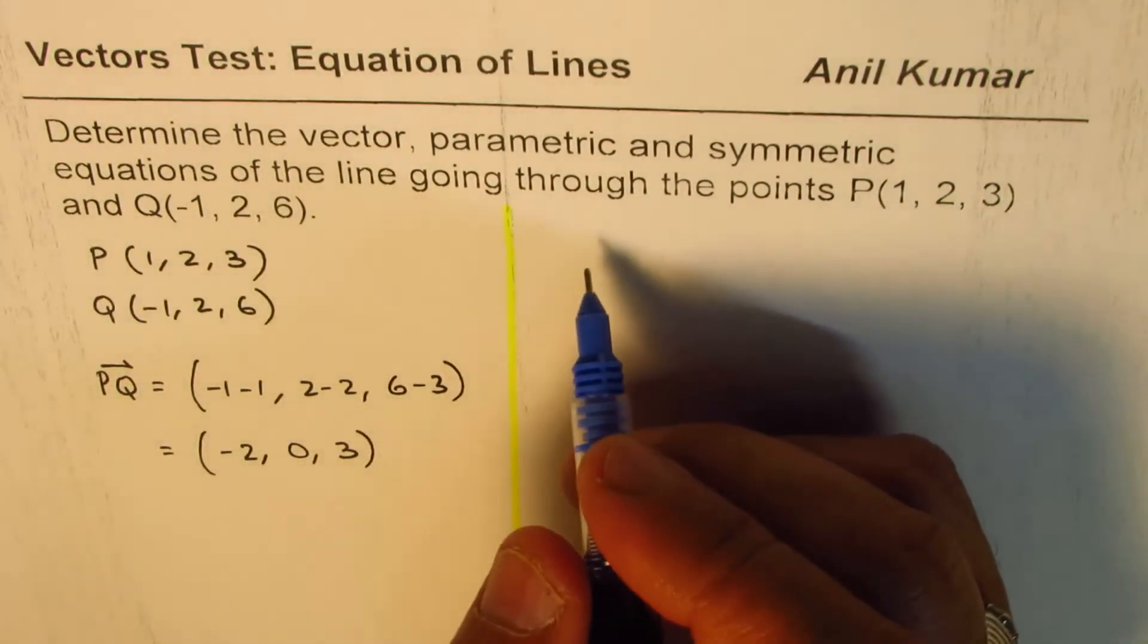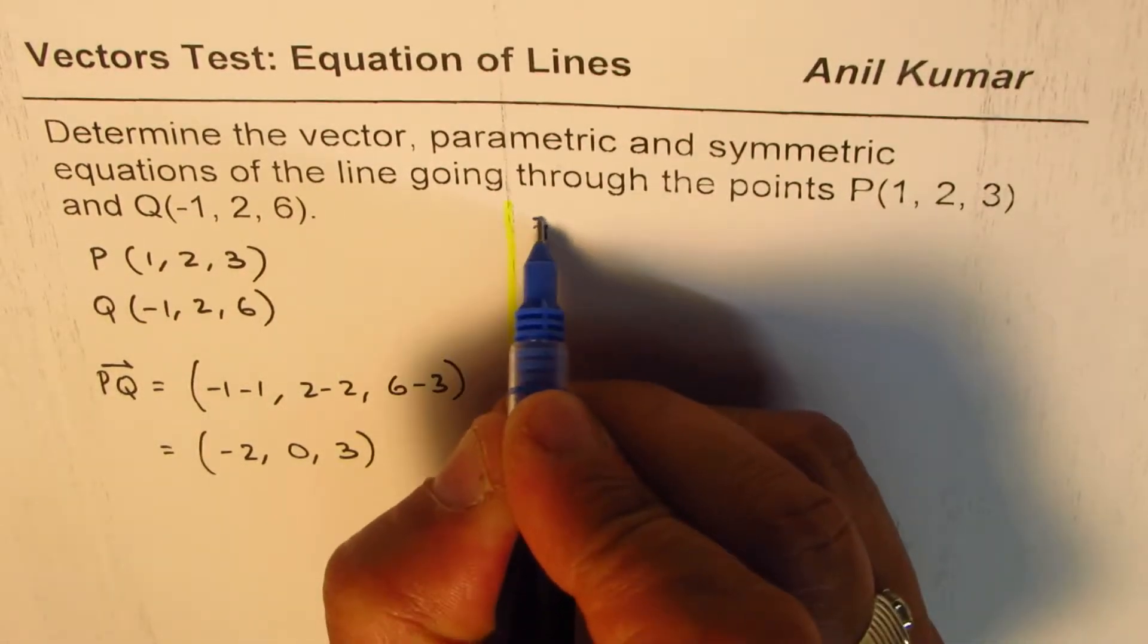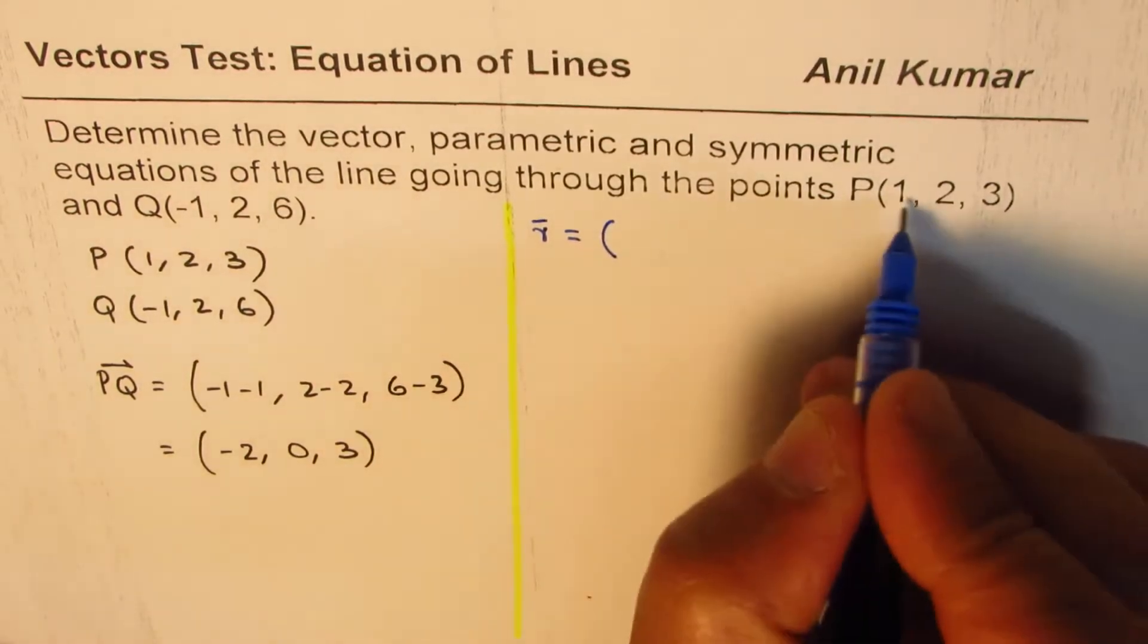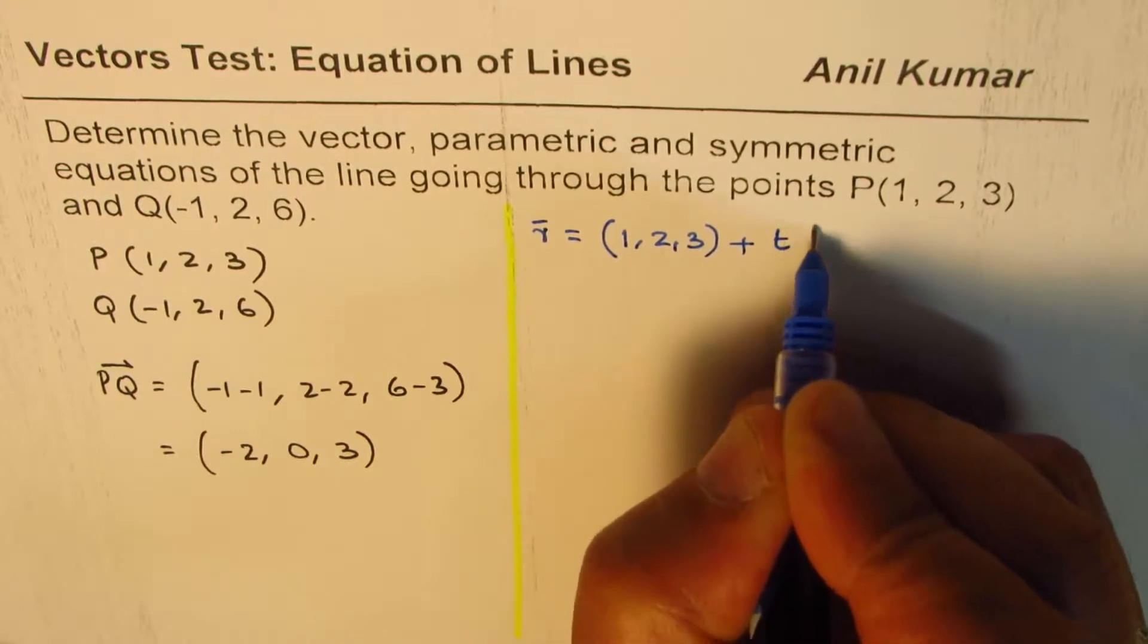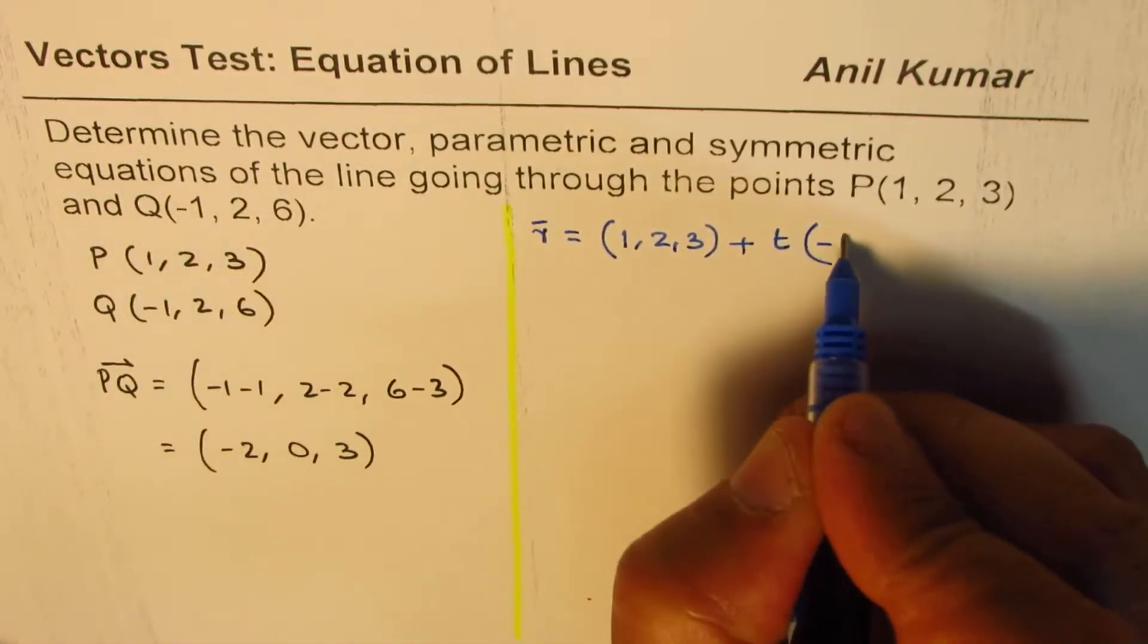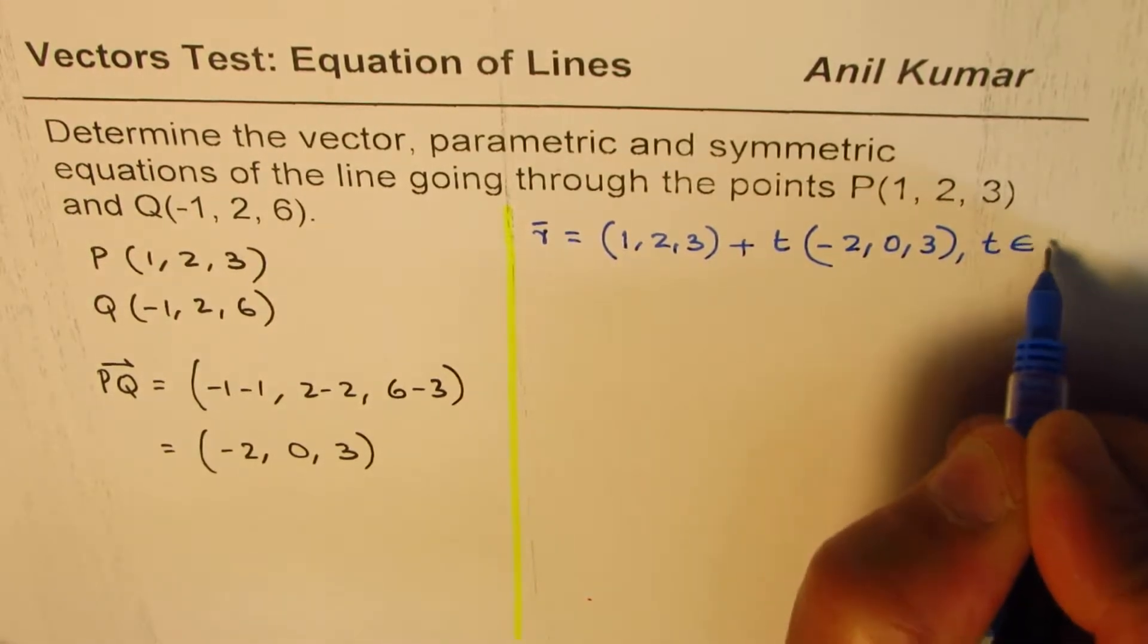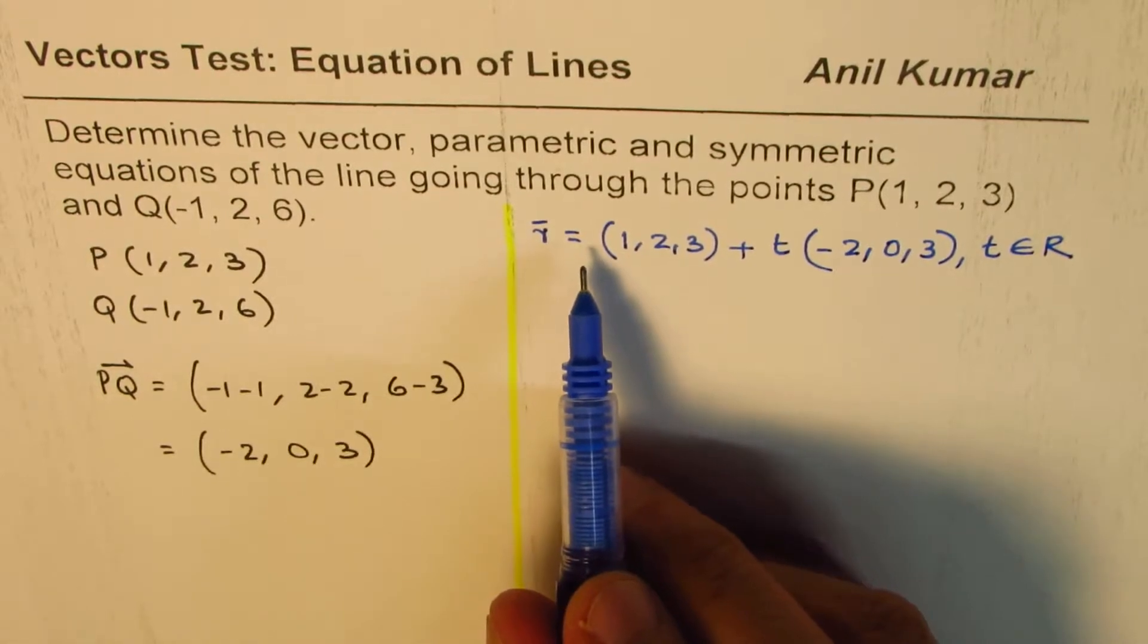So let's first begin by writing the vector equation of the line. The line R equals, you can select one of these points, just select P, which is (1, 2, 3), plus the parameter t and the direction (-2, 0, 3), where t belongs to real numbers. So that represents the line vector equation.